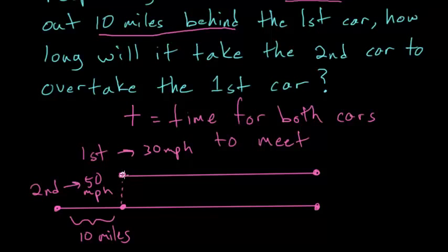The first car is going to start and then travel for t amount of time to this point here. And the entire way it's going the same speed. So we could say that the distance the first car travels is just that 30 miles an hour multiplied by the number of hours it takes. Since we know that the rate of something multiplied by the time will just give us a distance.